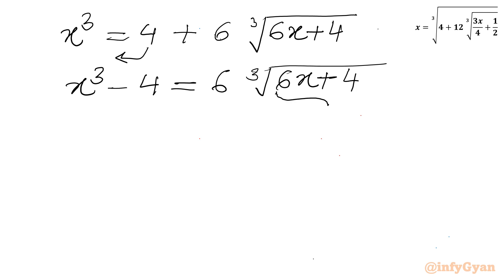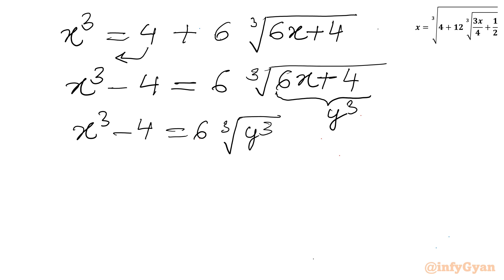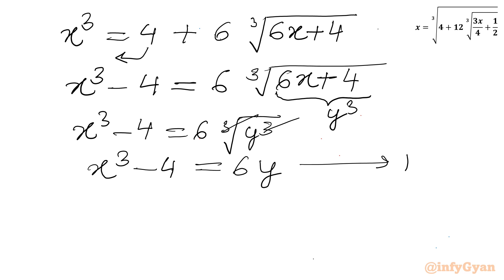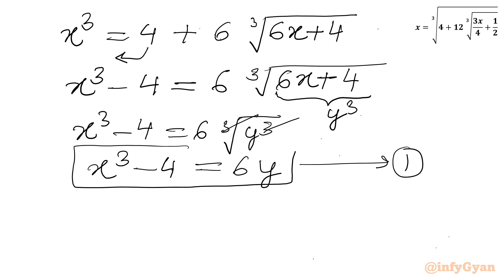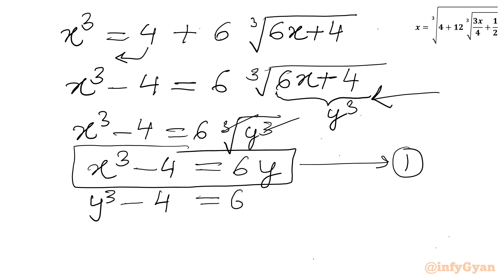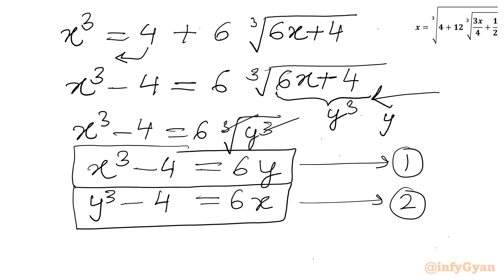Now I will use substitution. Let us say the radicand equals y cubed. So I can write x cubed minus 4 equals 6 times the cube root of y cubed. The cube root and cube cancel, giving x cubed minus 4 equals 6y — I'll call this equation 1. And from the substitution, y cubed equals 6x plus 4, so y cubed minus 4 equals 6x — equation 2.